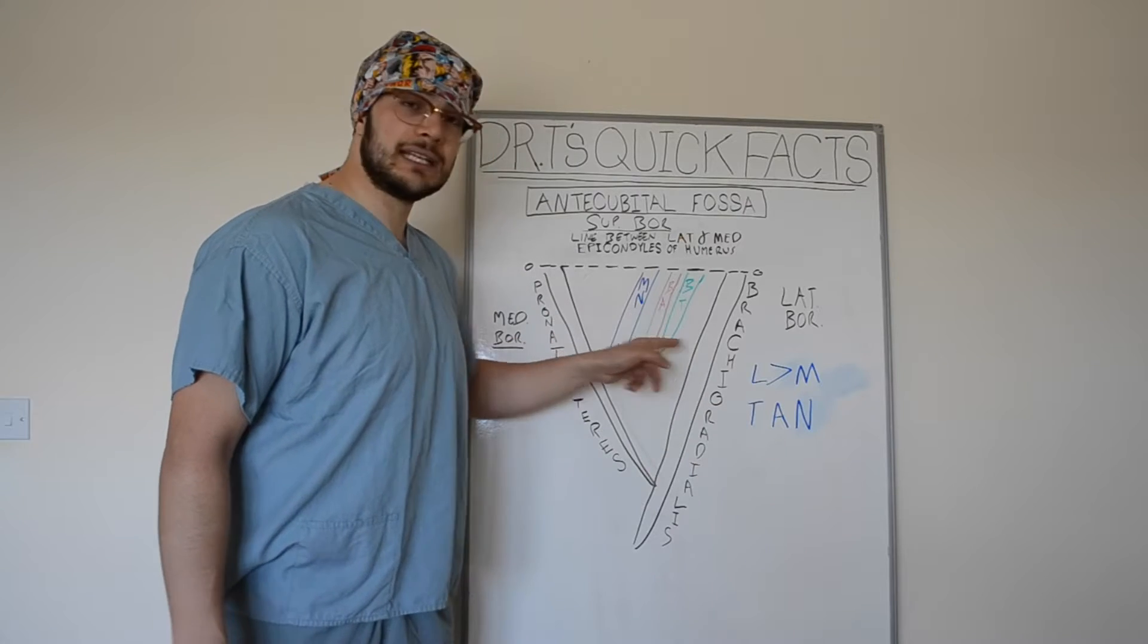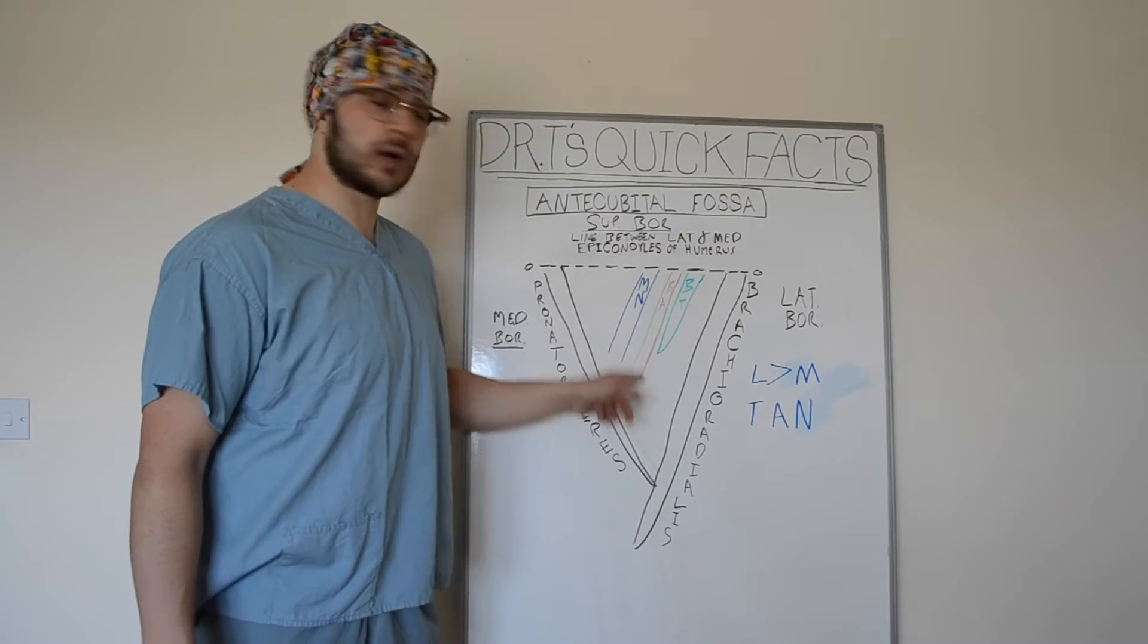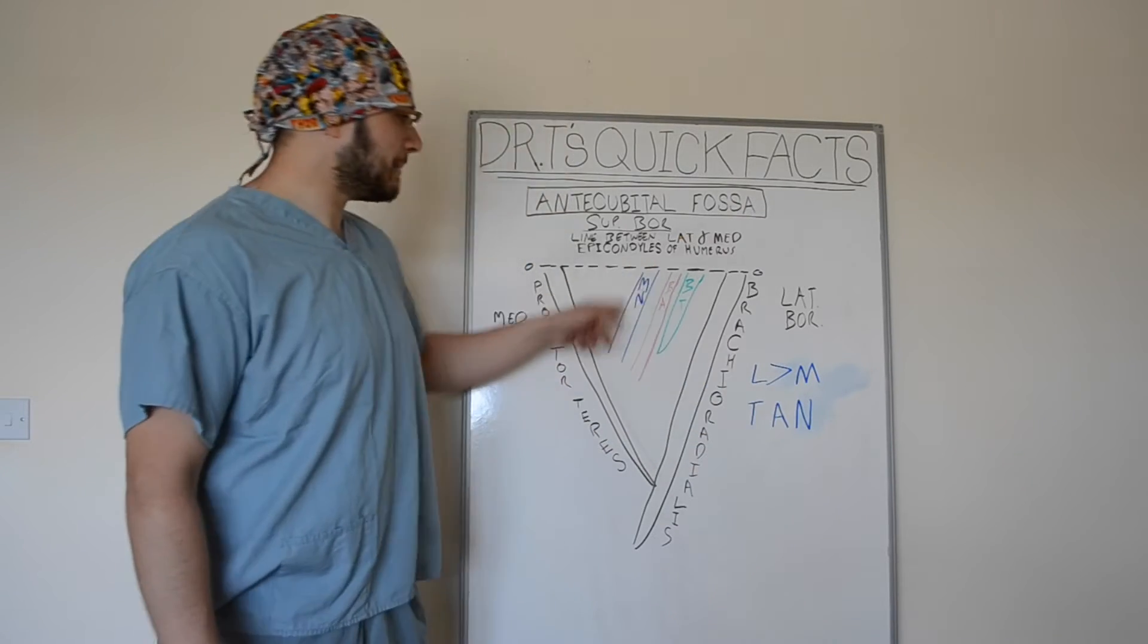T stands for the bicep tendon. A stands for the brachial artery, and N stands for the median nerve.